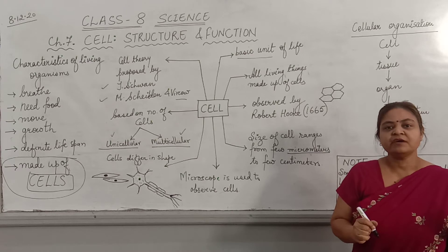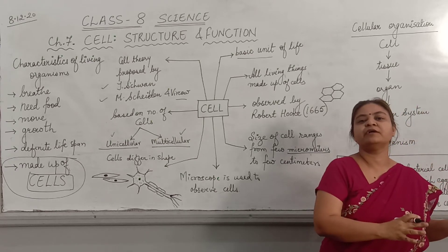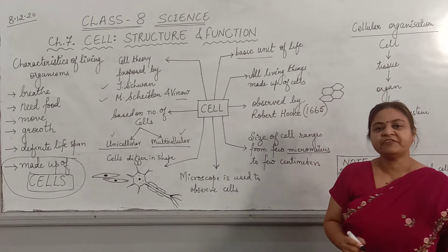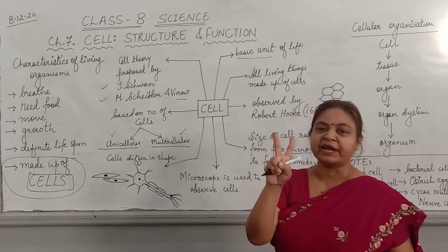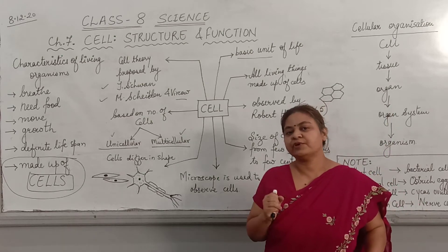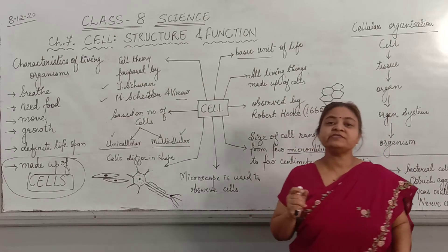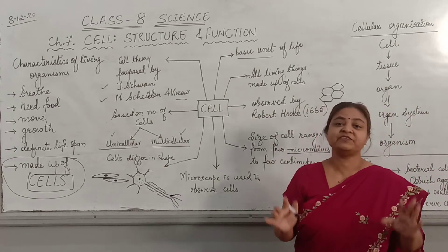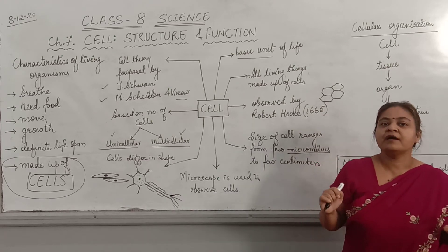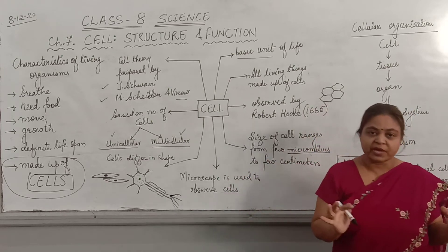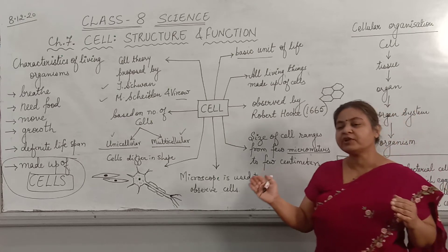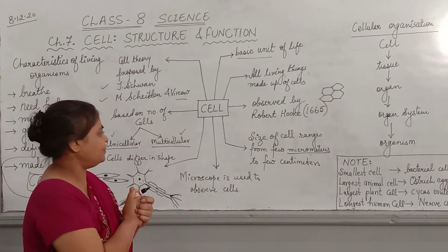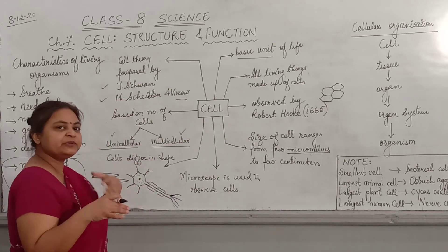Based on whether the nucleus is well developed or not, organisms are also differentiated into two categories: prokaryotic and eukaryotic. Those organisms in which the cell has a well-developed nucleus with a double-layered wall are called eukaryotic. Primitive organisms like bacteria do not have a nucleus enclosed in a wall — that we will be studying later.